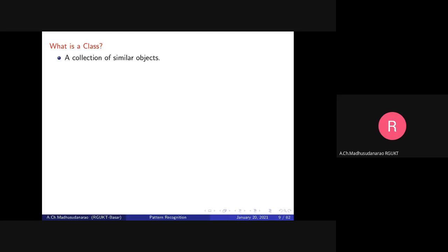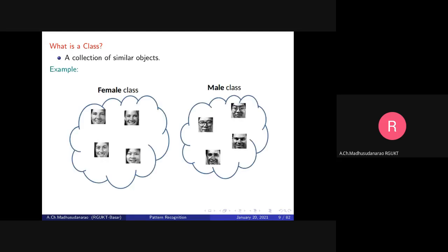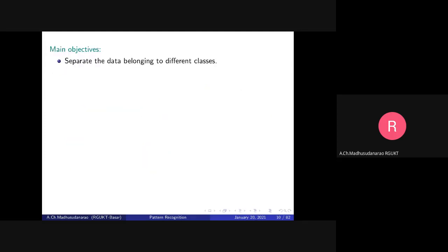A class corresponds to a collection of similar objects. For example, all females form one class and all males form another. You can have a dogs category, a cats category, a goats category, and so on. The main objective of classification is to separate data belonging to different classes, and given new data, the system should assign it to the correct category or label.